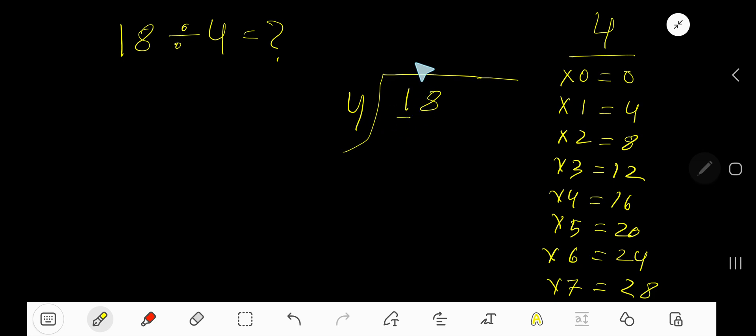4 goes into 1 how many times? 0 times. 0 times 4 is 0. Subtract 1. Bring down this 8.